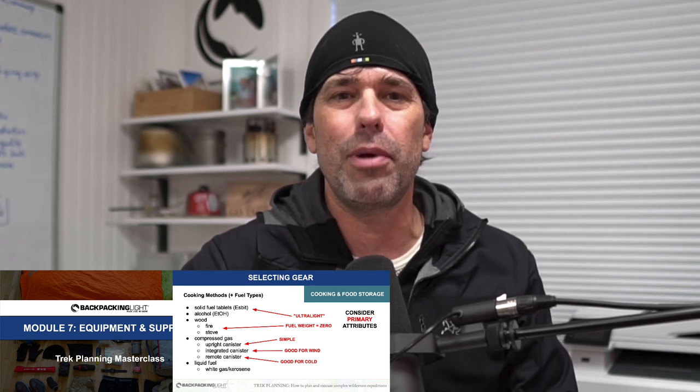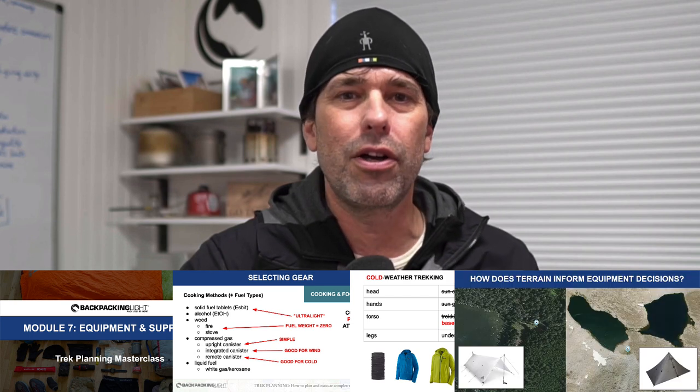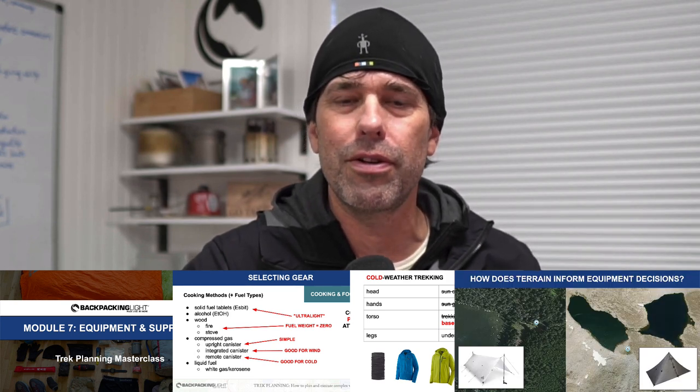Fourth, we're going to start tying all this together — the route plan, the environmental forecast, and the terrain analysis — and use this information to make much better decisions about what type of gear to bring on a trip and how much. You'll gain insight into my decision-making framework for selecting shelter and sleep systems, a clothing ensemble, cooking and hydration gear, traction devices for snow and ice travel, and more. As part of this process, we'll also talk about contingency planning in the event of unexpected environmental events so you can be armed with the confidence and equipment you'll need to deal with the challenges while still keeping your pack weight as low as possible.